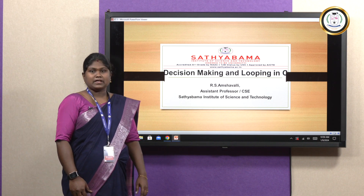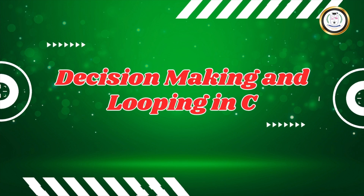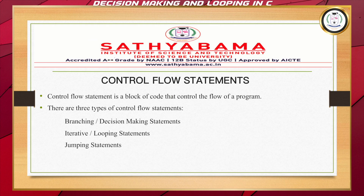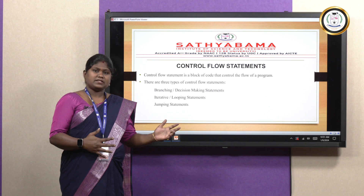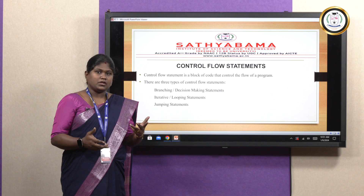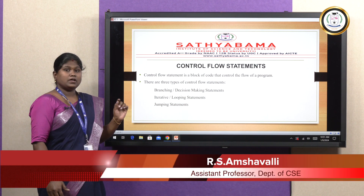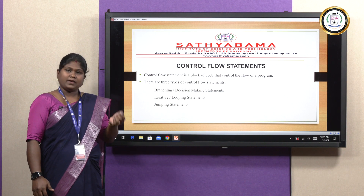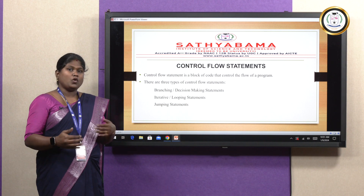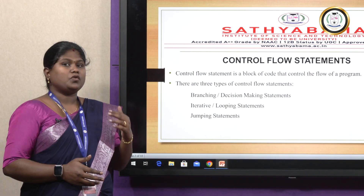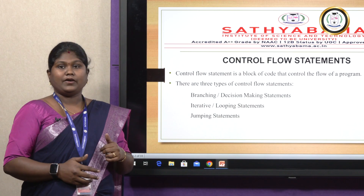In today's session, we'll discuss decision-making and looping statements in C language. I hope you have understood the basics of C language. Now we'll move to the decision-making statements or control flow statements. Usually, the basic C program will follow a sequential approach, whereas there come scenarios where we have to make a decision, and based on that, the flow of the program may vary. So for that, we'll use control flow statements.